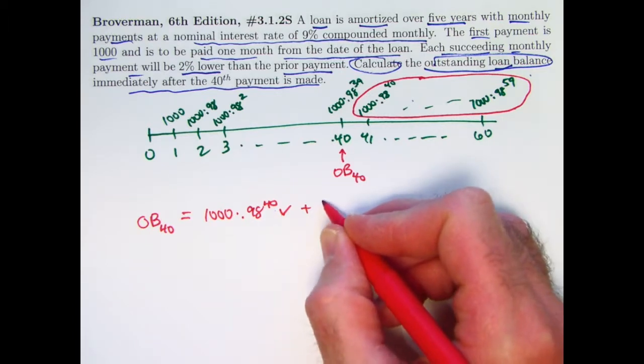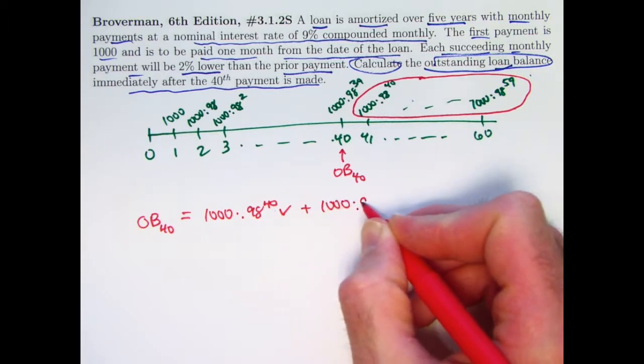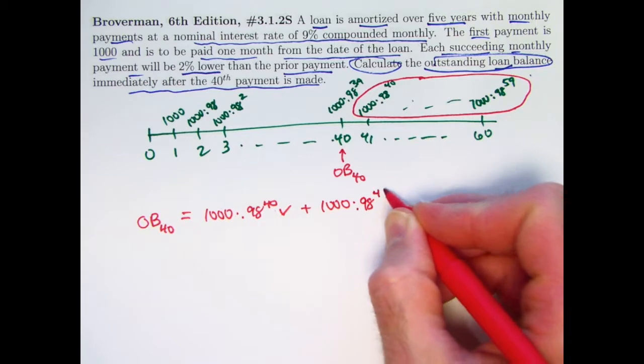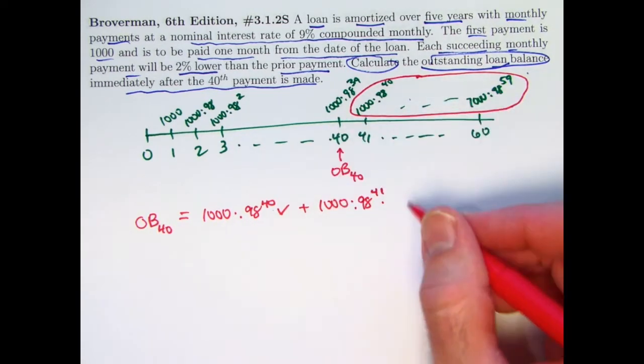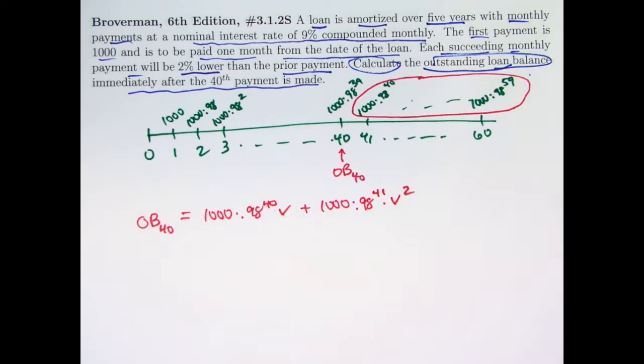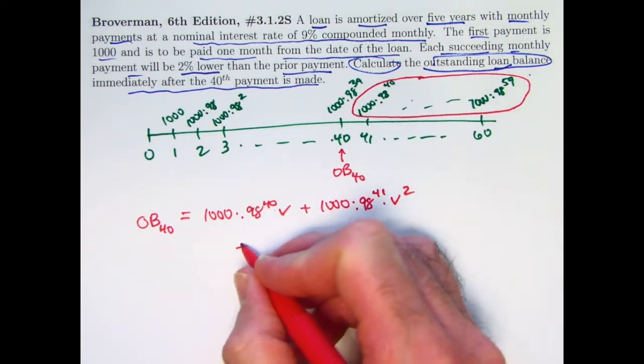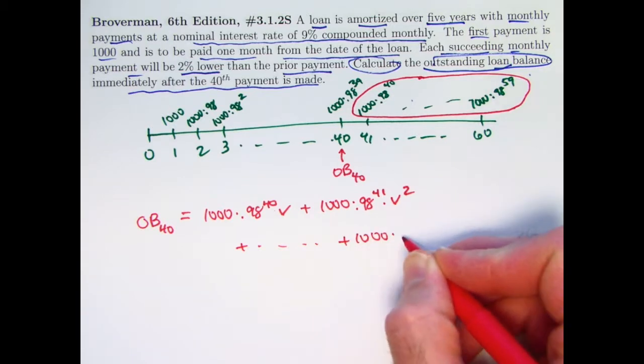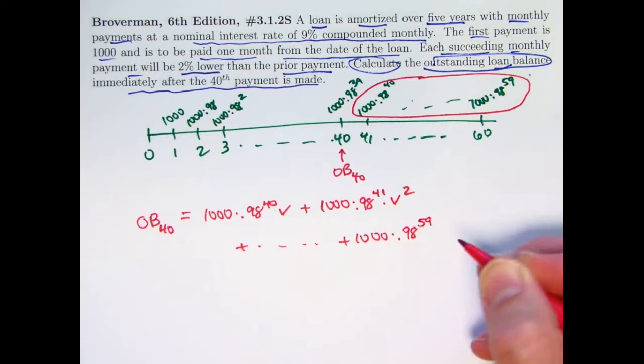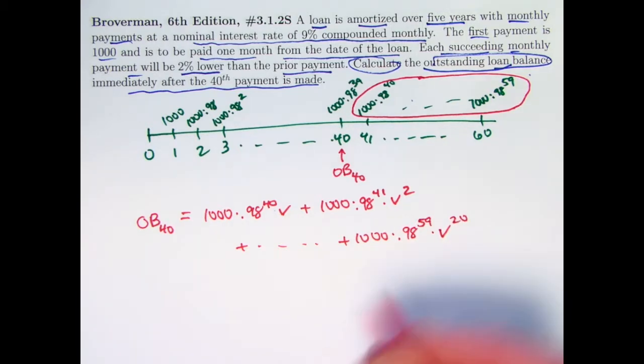And then the next term would be $1,000 times 0.98 to the 41st at time 42, but that needs to go back in time by two months, multiplied by V squared. The last payment at time 60 has a present value equal to 1,000 times 0.98 to the 59th power times V to the 20th power. We go back 20 months from month 60.